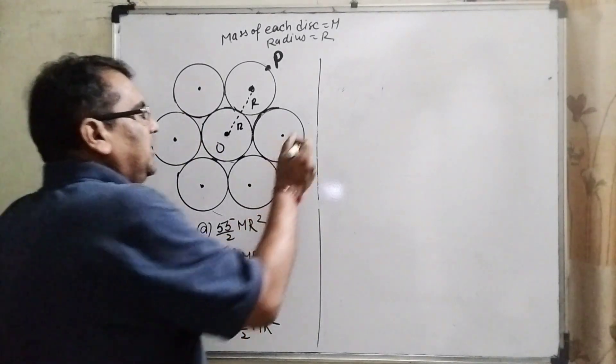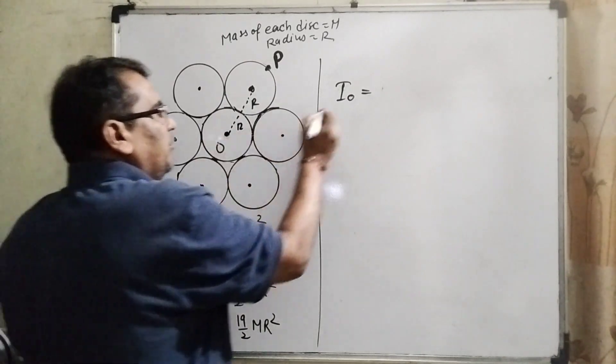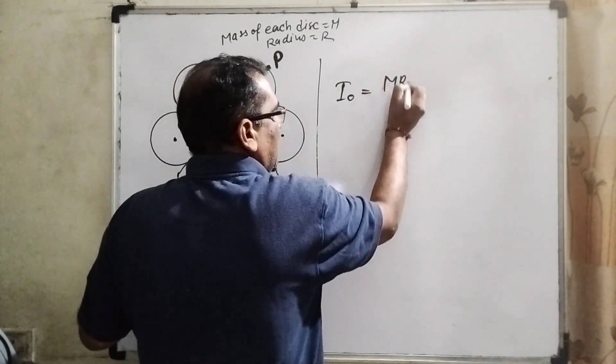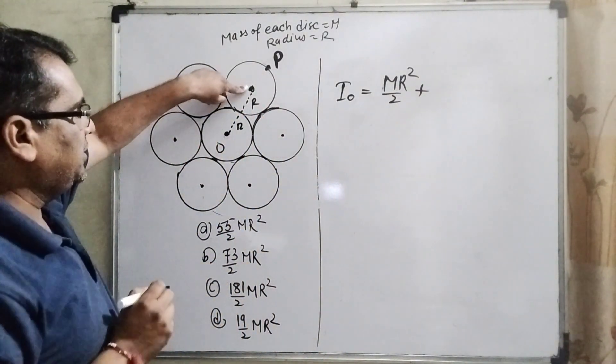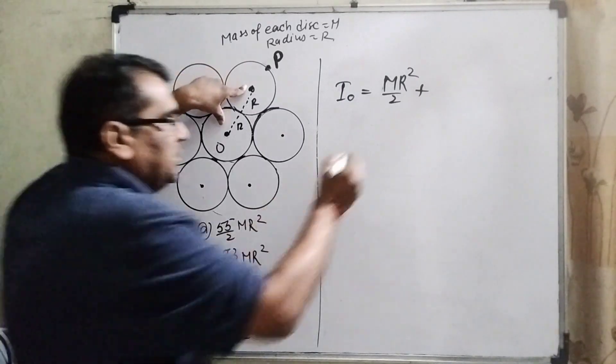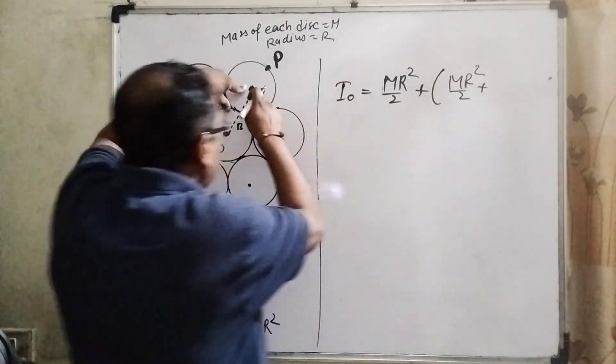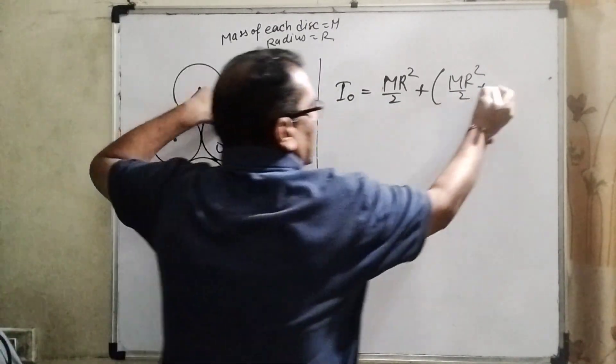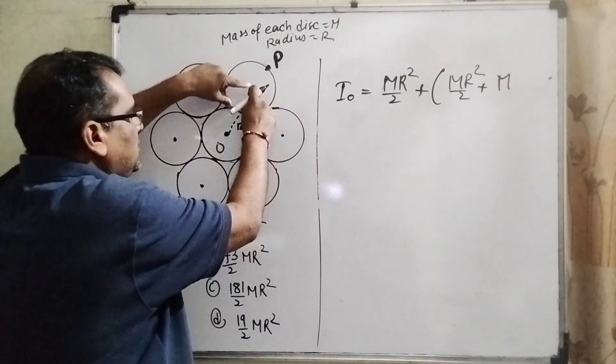You can see the moment of inertia at the center is MR²/2. Plus, now this point is shifted here - it means moment of inertia of this point is MR²/2, and this point shifted here means mass times distance squared. What is the distance? This R and this R equals 2R whole squared. And this whole system is like that six times - you can see: one, two, three,